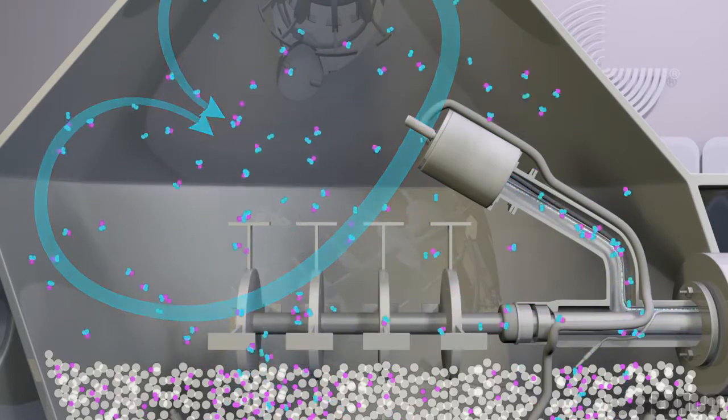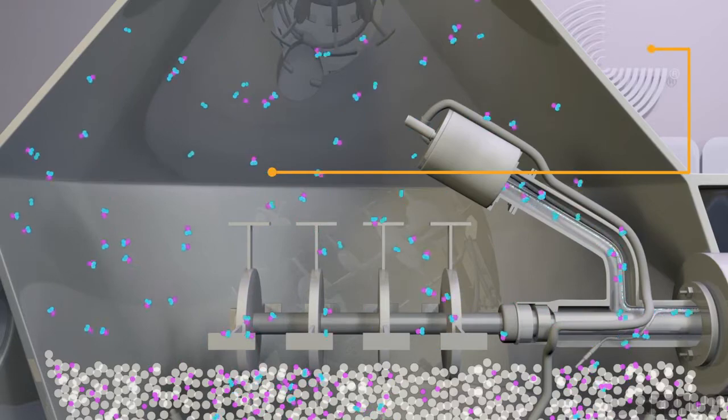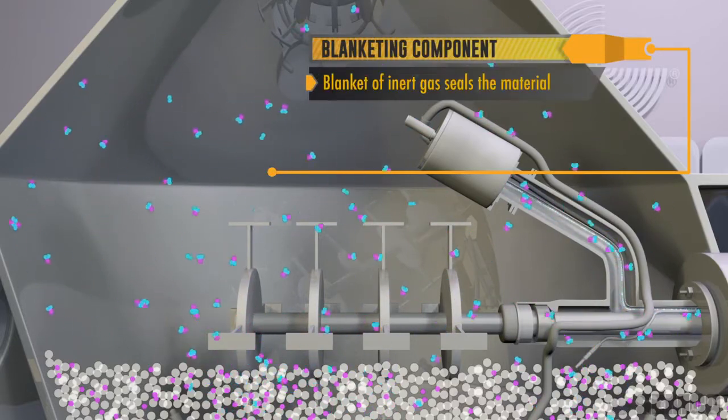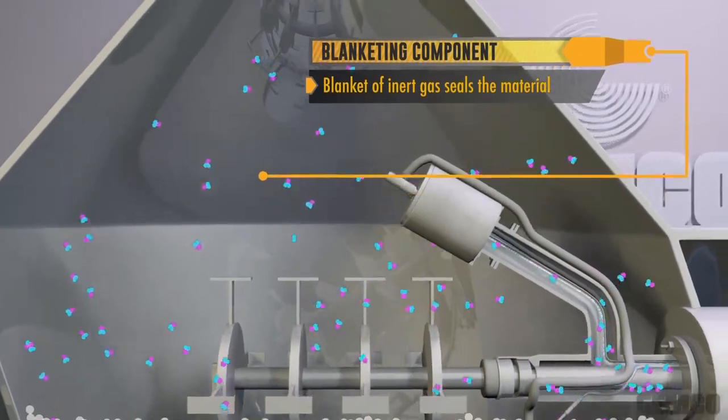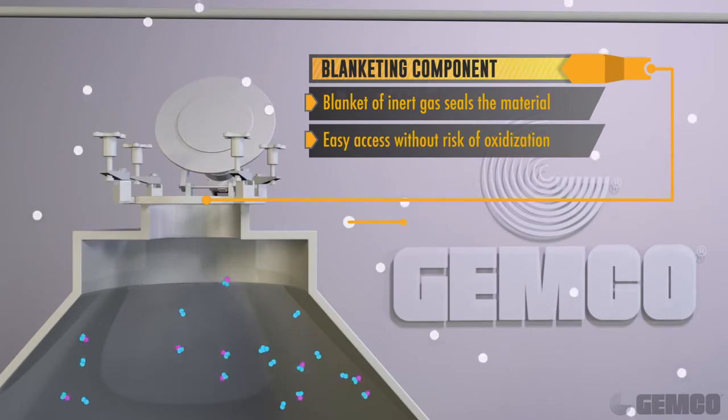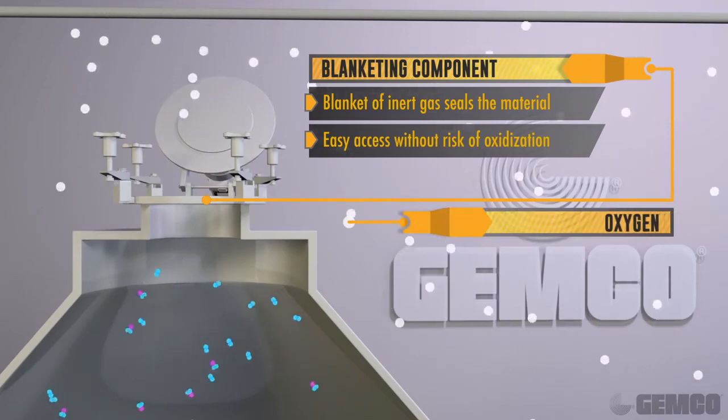JEMCO's gas purge also provides a simplified solution to oxygen sensitive or volatile material. A blanket of inert gas is used to cover the bed of material. This is especially important, as technicians often need to access the vessel through the cover or valve during charging and discharging.